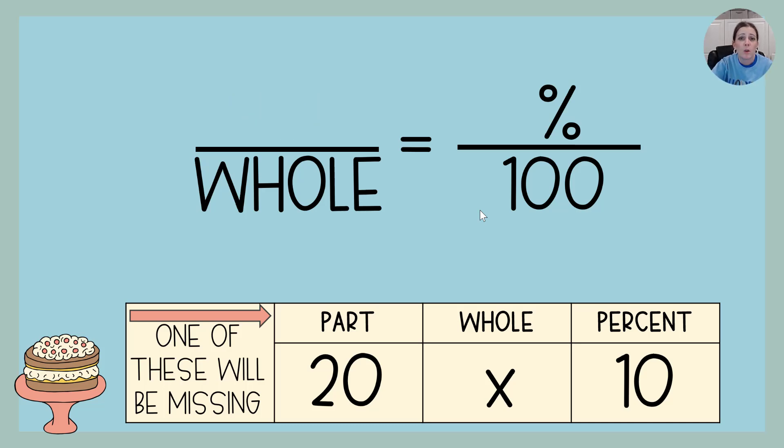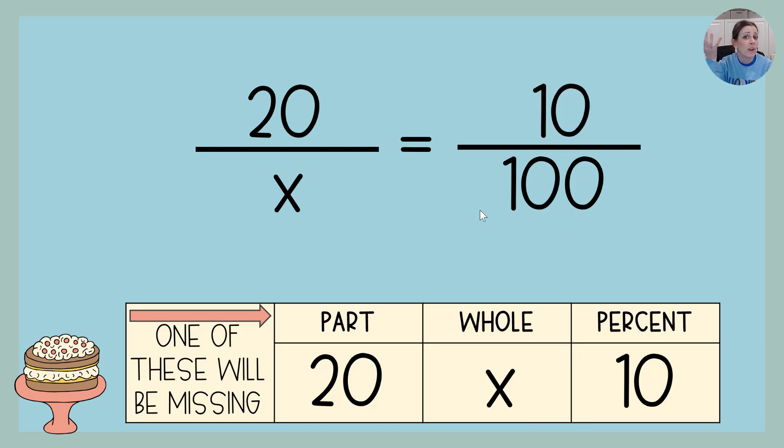We're going to take that and use it to fill in the missing pieces on that equivalent ratio. So the part we said was 20, the whole we said was X, percent is 10, and then 100 is just 100. That's the one piece that will always be the same.